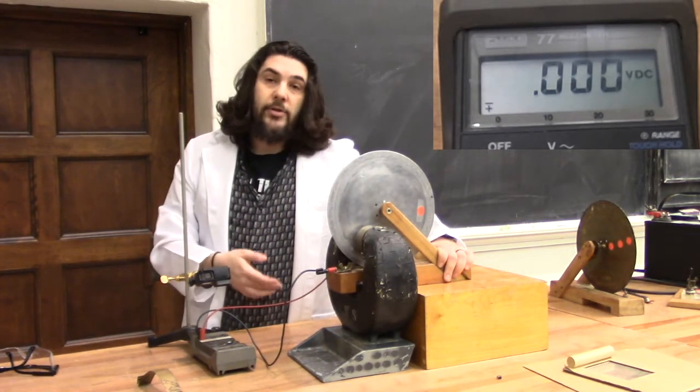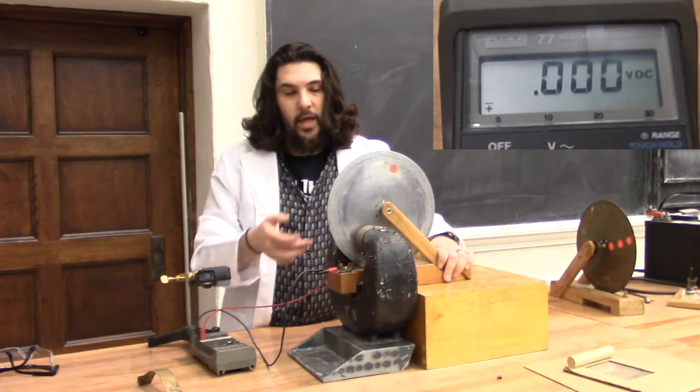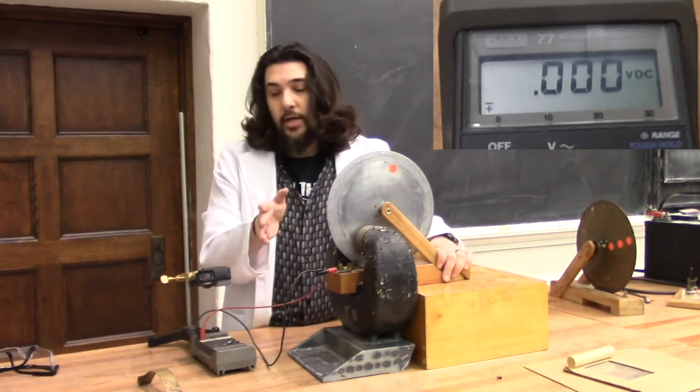You'll notice Barlow motors and generators are not very efficient, but we are getting measurable amounts of voltage out of it. And if I spin it the other way, I should get a negative voltage.